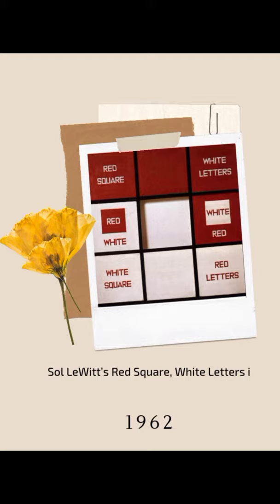Another example is Sol LeWitt's Red Square White Letters in 1962. In the 1960s, Sol LeWitt felt that color distracted from the idea of art by drawing attention to art's mere physical properties. So he subverts that tendency by placing the names of the colors of the piece.